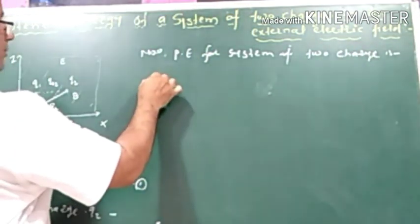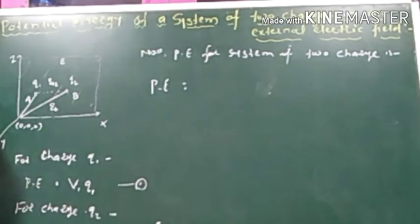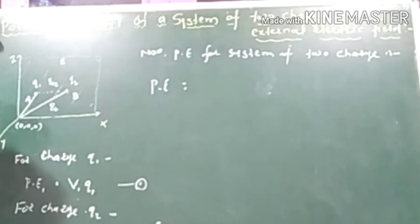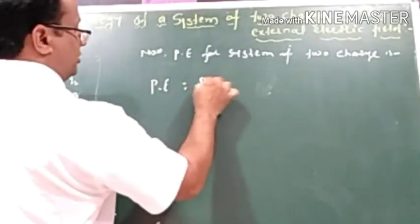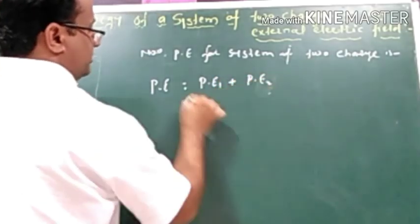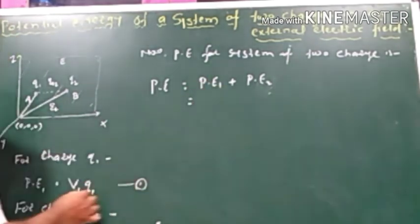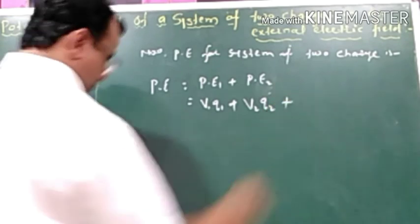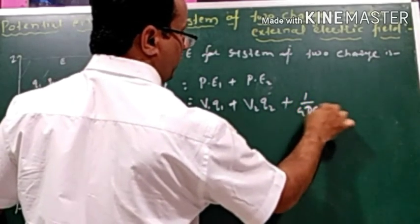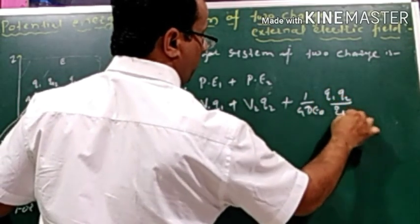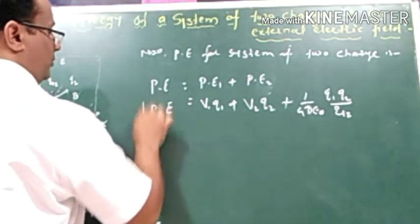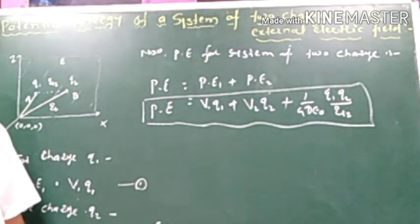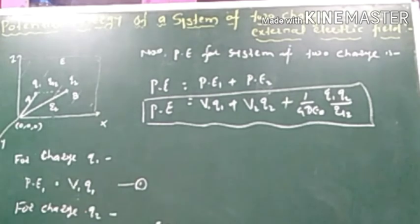The total potential energy for the system of two charges is equal to the potential energy of the first charge plus the potential energy of the second charge. So total potential energy = q1·V1 + q2·V2 + (1/4πε₀)·(q1·q2/r12). This is the final equation for the potential energy of a system of two electrical charges in an external electric field.